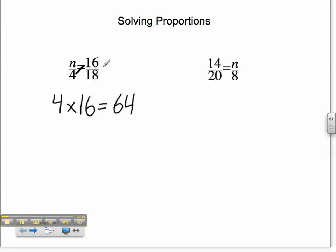Then I'm going to divide using my other number. 64 divided by 18 equals 3 and 5 ninths. So my final answer is n equals 3 and 5 ninths.